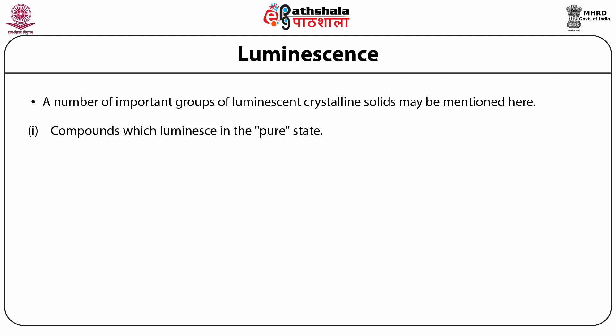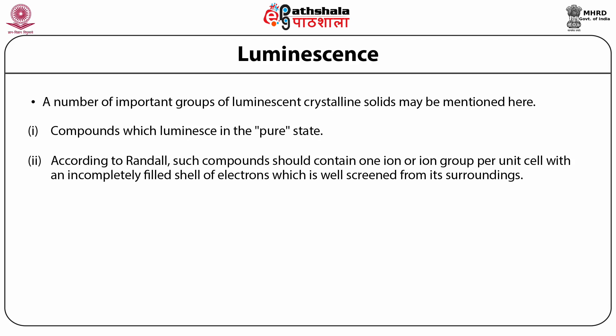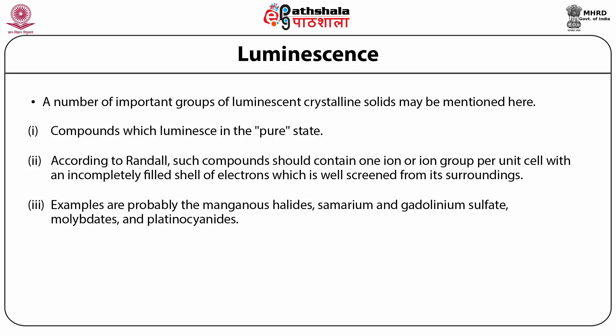Activators may be impurity atoms occurring in relatively small concentration in the host material, or a small stoichiometric excess of one of the constituents of the material. In the latter case, one speaks of self-activation. A number of important groups of luminescent crystalline solids may be mentioned. First, compounds which luminesce in the pure state. According to Randall, such compounds should contain one ion or ion group per unit cell with an incompletely filled shell of electrons well screened from its surroundings. Examples include halides, samarium and gadolinium sulfate, molybdates, and platinocyanides.